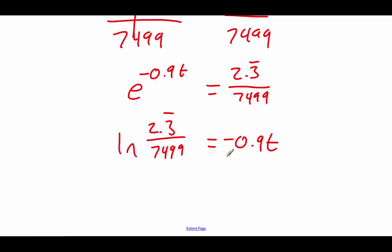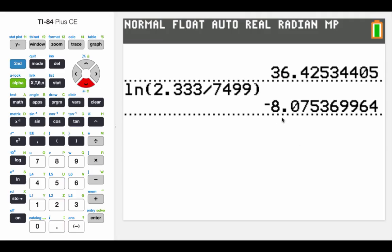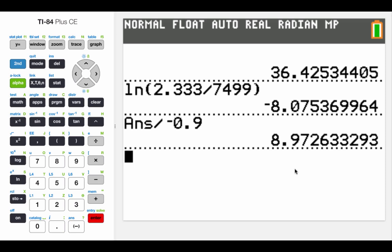Our last step is we need to divide by that negative 0.9 and I'm actually just going to do that right on my calculator. So we take that answer that we just got divided by negative 0.9, hit enter and we get about nine days.